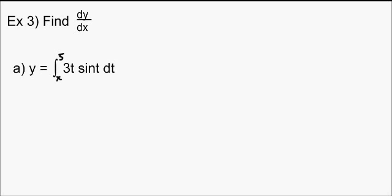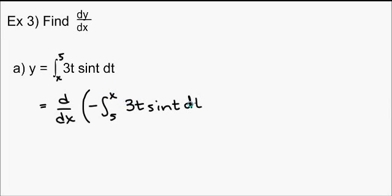Example 3, we want to find dy/dx for part a, y equals the integral from x to 5 of 3t sine t dt. But here's the problem. In order to use the fundamental theorem, my x needs to be on top. So that's not really too bad to fix. I know that I can switch my upper and lower limits if I change the sign of my integral. So I'm going to make it negative.